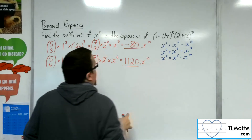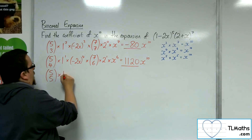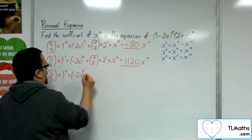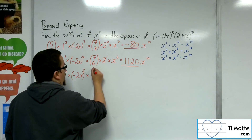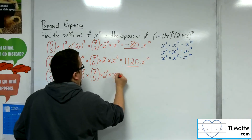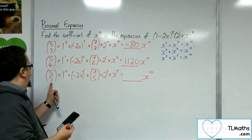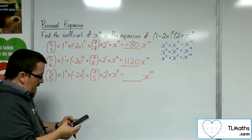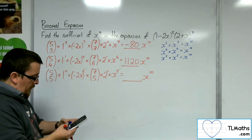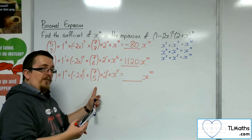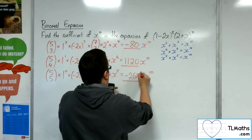For the third combination, we want x to the 5 from both brackets. First bracket: 5 choose 5, times 1 to the 0, times (minus 2x) to the 5. Second bracket: 7 choose 5, times 2 squared, times x to the 5. So: 5 choose 5 = 1, times (minus 2)⁵ = minus 32, times 7 choose 5 = 21, times 4 = minus 2,688.